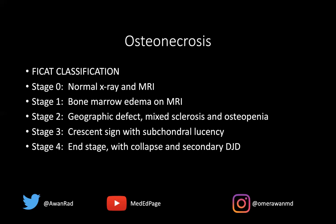Stage four is end-stage AVN or osteonecrosis. You get articular collapse, and more importantly, you start to get secondary degenerative joint disease and osteoarthritis. Notice that in all earlier stages — zero, one, two, and three — only one side of the joint is involved, such as the humeral head in the shoulder or the femoral head in the hip. But in stage four, you start to see the other side of the joint involved as well, with subchondral cysts and osteophytes in the glenoid or acetabulum. That's the most dreaded complication of AVN — secondary osteoarthritis. This is a useful classification for understanding how osteonecrosis progresses.